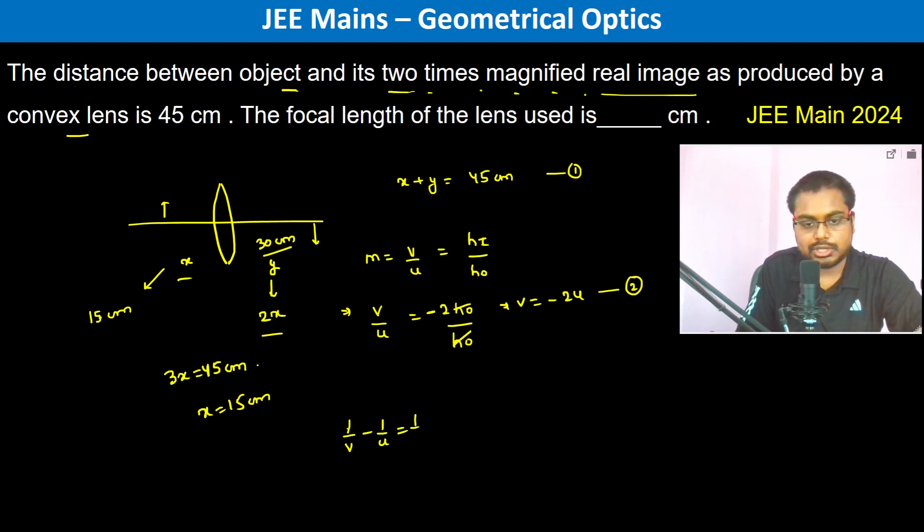Therefore, 1 by 30 minus of minus 1 by 15 is equal to 1 by F. So therefore 1 by F becomes 1 by 30 plus 1 by 15, which is 1 plus 2 over 30. Therefore, F is equal to 10 centimeters.